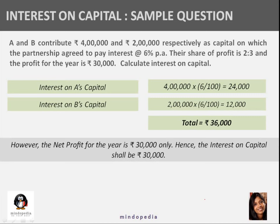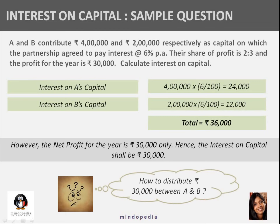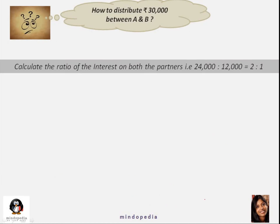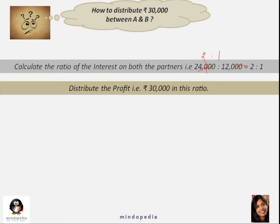The net profit for the year is only 30,000. In the case of appropriation, we cannot give more than the profit. The interest on capital shall be at maximum 30,000. How to distribute 30,000 when the interest on capital is coming out to be 36,000? We calculate the ratio of interest on capital for both partners: A's is 24,000 and B's is 12,000, giving a ratio of 2:1.